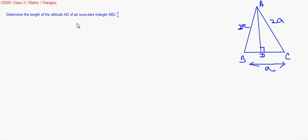Now in this figure they say, I write the question here: Determine the length of the altitude of an isosceles triangle ABC of sides 2a, 2a, and a. So we have to find AD.